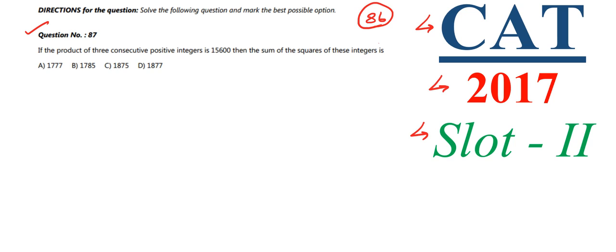Question 87 says: if the product of three consecutive positive integers is 15,600, find the sum of the squares of these integers. We have been given three consecutive positive integers whose product is 15,600. We need to find the numbers, square each one, and then sum those squares.